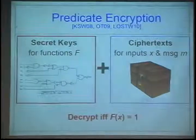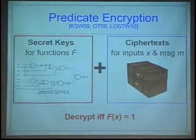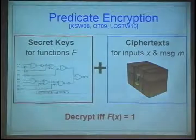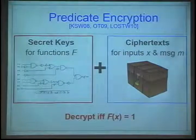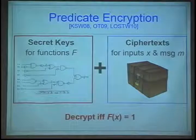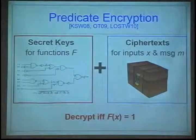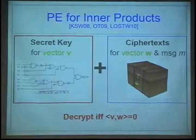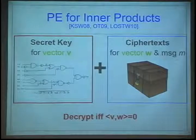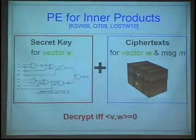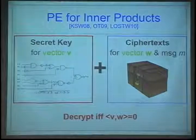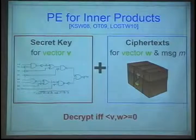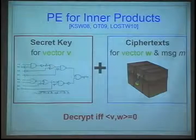What is predicate encryption? Most of you are familiar with it. The secret key is associated with some function f. The ciphertext is associated with some input to this function, and you should be able to decrypt if and only if f of x is equal to 1. For predicate encryption for inner products, the secret key is associated with a vector. The ciphertext is also associated with a vector, and you should be able to decrypt if the inner product is 0.